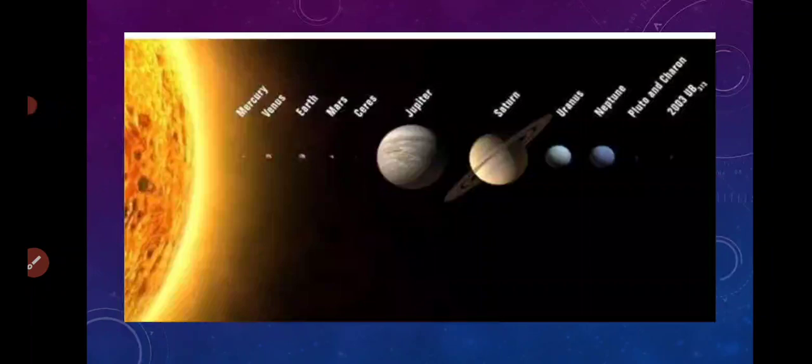In the solar system, we have Mercury, Venus, Earth, Mars, Jupiter, Saturn, Uranus, and Neptune. These are the eight planets in our solar system.